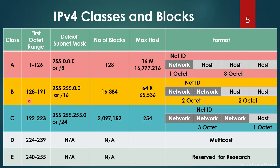In Class B, the first octet range is from 128 to 191. The default subnet mask is 255.255.0.0, also represented as /16. The number of blocks in this range is more than 16,000, and the maximum hosts per block is 64,000. The first two octets are the network ID and the last two octets are the host portion.